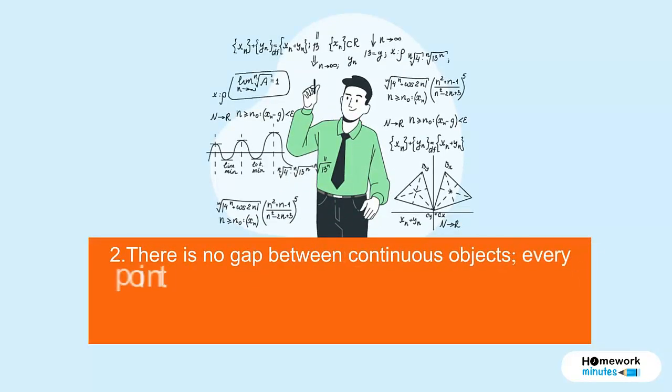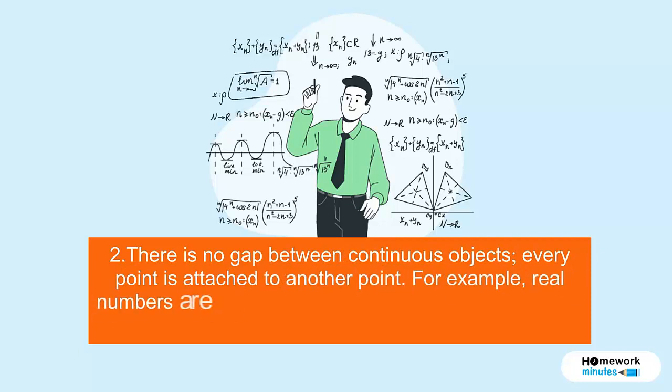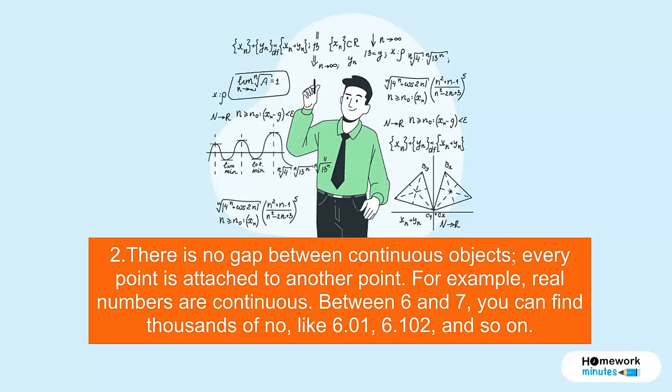There is no gap between continuous objects. Every point is attached to another point. For example, real numbers are continuous. Between 6 and 7, you can find thousands of numbers, like 6.01, 6.102, and so on.